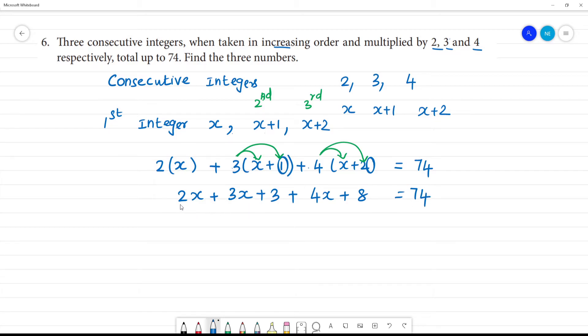Now, adding all the x terms: 2x plus 3x plus 4x equals 9x. 9x plus 3 plus 8, which is 11. That equals 74. So 9x equals 74 minus 11, which is 63. Therefore, x equals 63 by 9, which is 7.